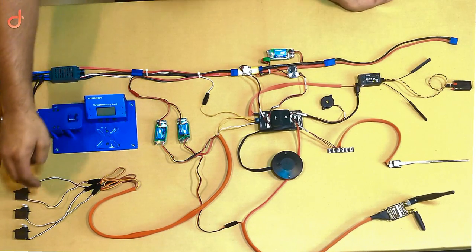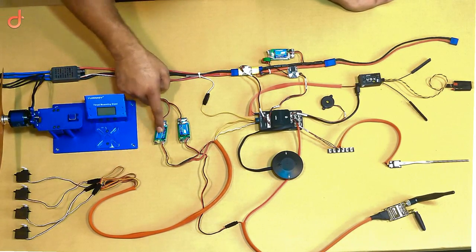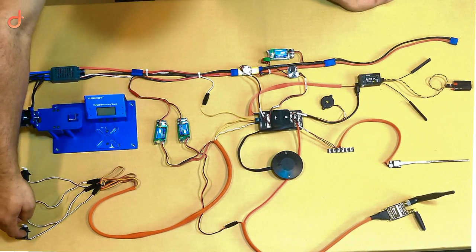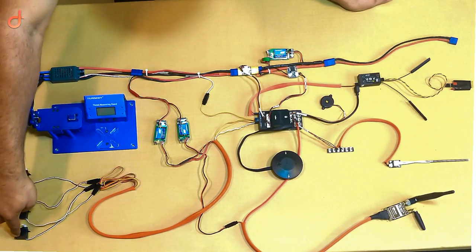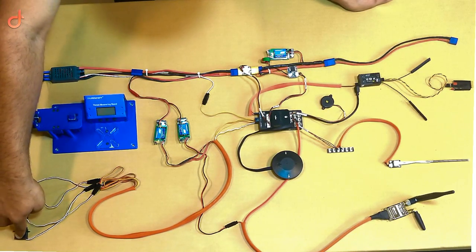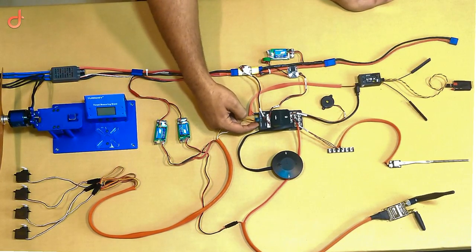Then we have servos. Same way, we are going to give power externally to the servos through this BEC. We have four servos: two for ailerons, one for elevator, one for rudder. The two ailerons are interconnected through a Y cable and it is going to come into channel one over here, into port one.